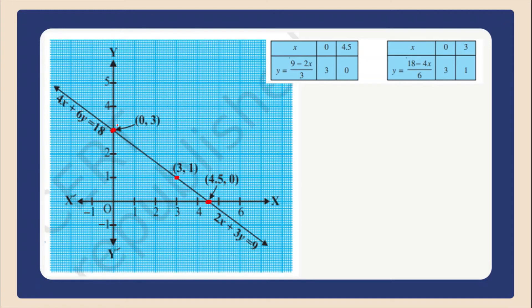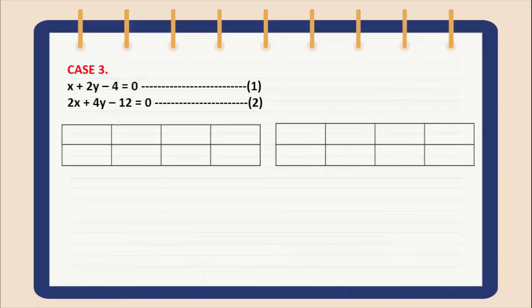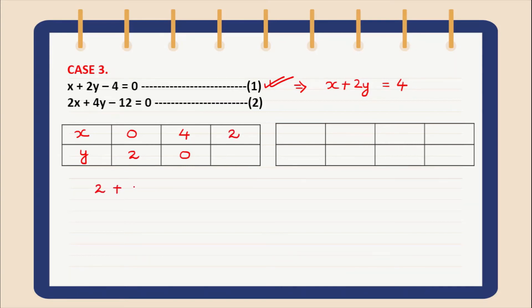Now let us move on to Case 3. Let us consider these two pairs of linear equations. For the first equation, I can simplify it as x plus 2y equal to 4. So for x equal to 0, the value of y will be 2. For y equal to 0, x will be 4. And if x equals 2, then 2y equals 2, which implies y equals 1.